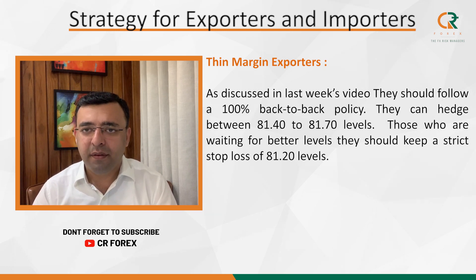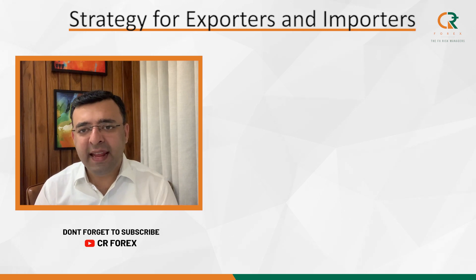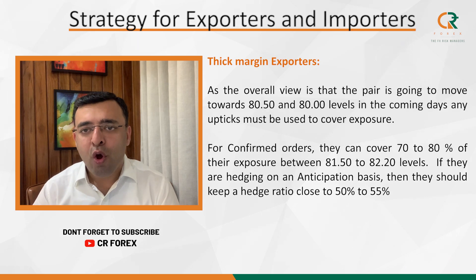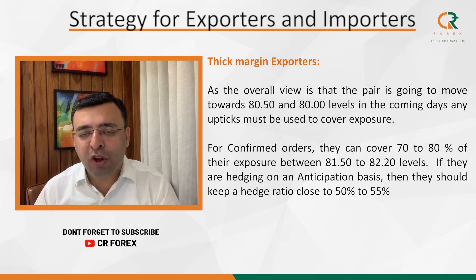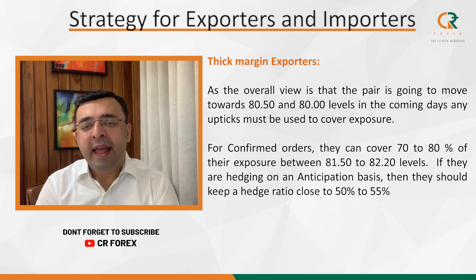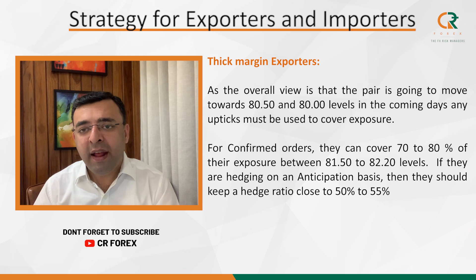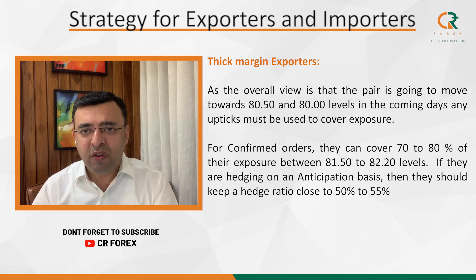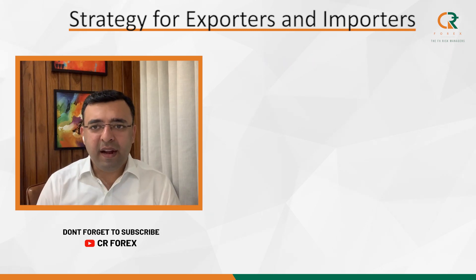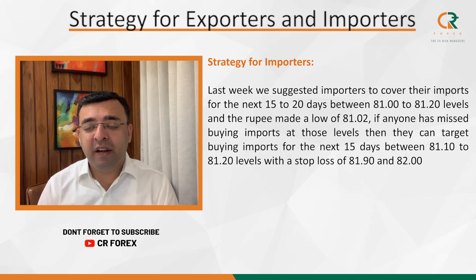Now let us discuss strategy for thick margin exporters like textile exporters, engineering exporters, or pharma exporters. As the overall view of the pair remains on the stronger side, we are suggesting that any uptick has to be taken as an opportunity to hedge. If any exporter is hedging on the basis of a confirmed order, they should hedge 70 to 80 percent of their exposure between 81.50 to 82.20. If they are hedging on an anticipation basis, they can keep a hedge ratio between 50 to 55 percent.